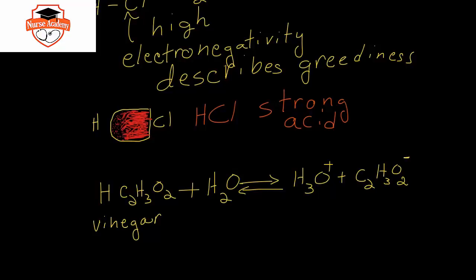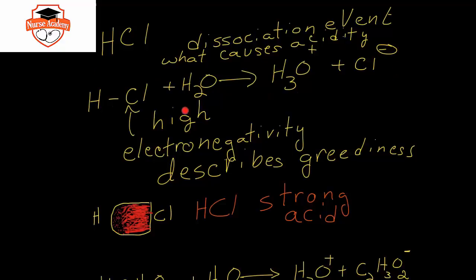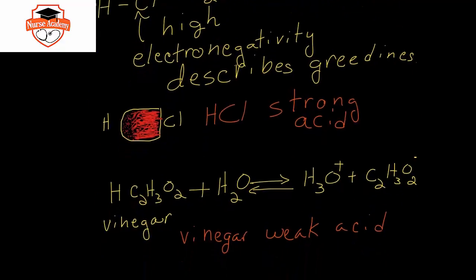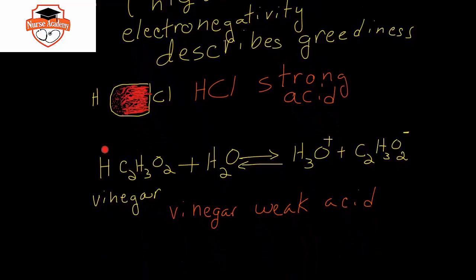I would not recommend drinking hydrochloric acid, but vinegar we eat on our salad all the time. The difference between strong and weak is how much of it dissociates. Every single hydrochloric acid molecule will dissociate 100% to make hydronium ion and chloride ion. With a weak acid like acetic acid or vinegar, not every one of your original molecules at equilibrium will lose its hydrogen ion or be deprotonated.